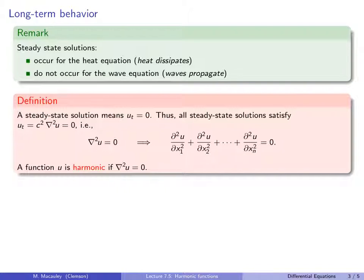Let's start with a remark about something we've seen for one-dimensional PDEs that holds in higher dimensions as well. Steady state or equilibrium solutions occur for the heat equation because heat dissipates, but they do not occur for the wave equation because waves propagate — assuming there is no damping. If there is damping, the wave is going to die out.